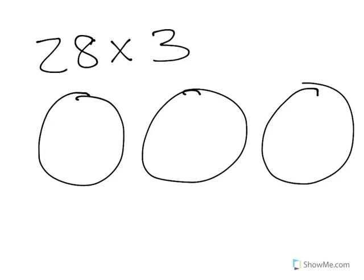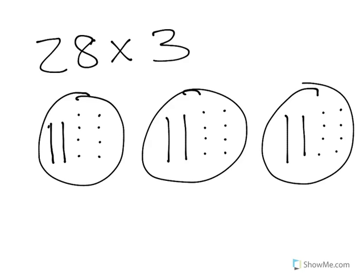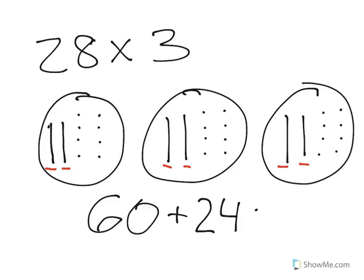Draw 3 groups and use a simple base-10 representation. For 28, draw 2 sticks for the tens and 8 dots for the ones — and repeat that for each of the 3 groups. Now count up the tens: 10, 20, 30, 40, 50, 60. Write down 60. Then count up all the ones across the three groups — 8 per group gives 24. 60 plus 24 gives us a product of 84.